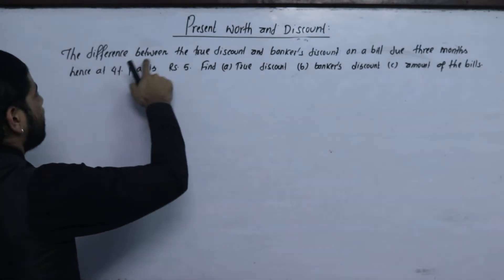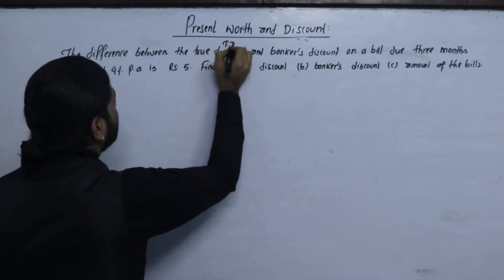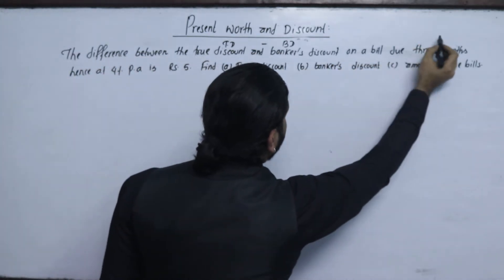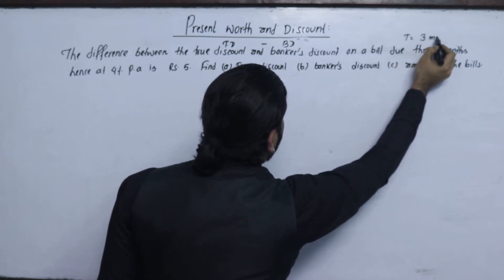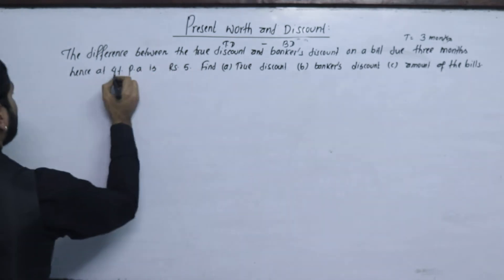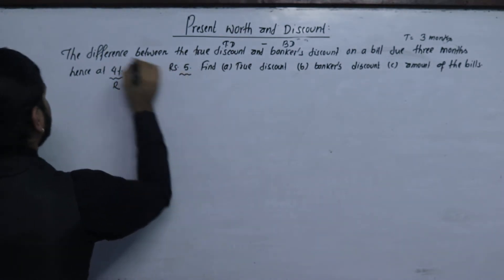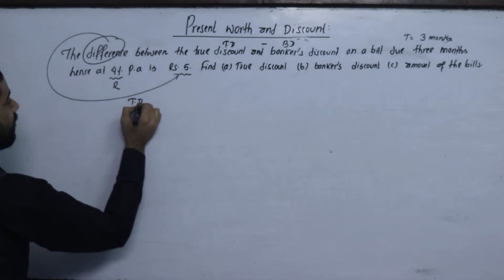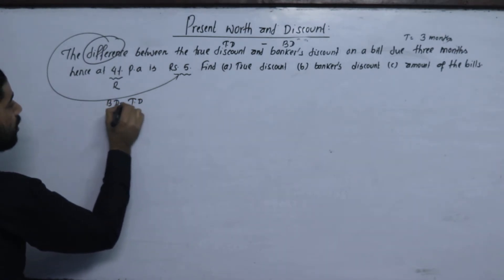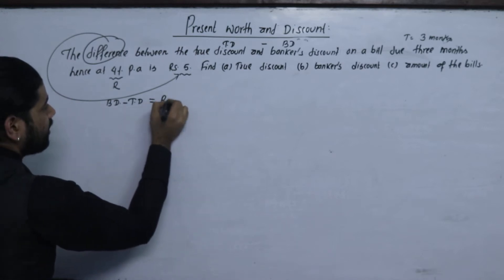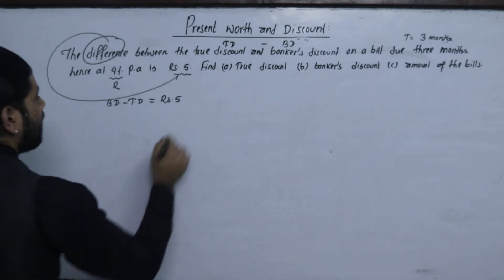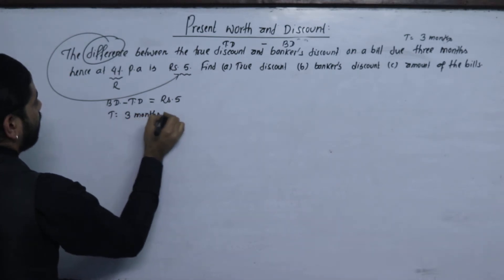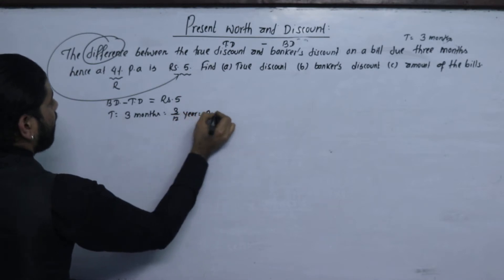The difference between the true discount and banker's discount (TD minus BD) on a bill due 3 months at 4% rate per annum is Rs. 5. The difference TD minus BD equals Rs. 5. Rate is 4% per annum and time is 3 months, which equals 3 divided by 12 years, equal to 0.25 years.